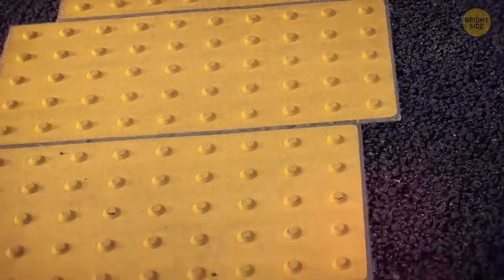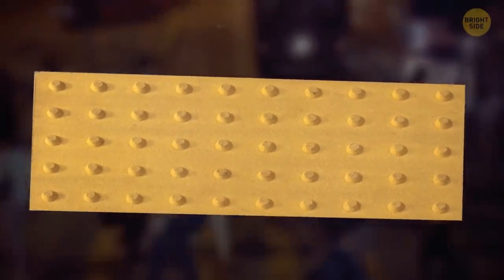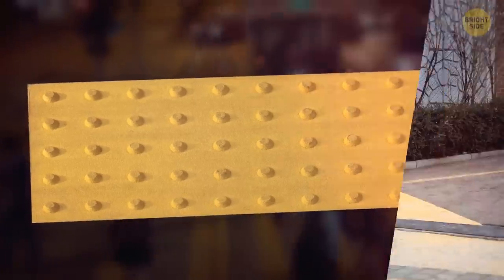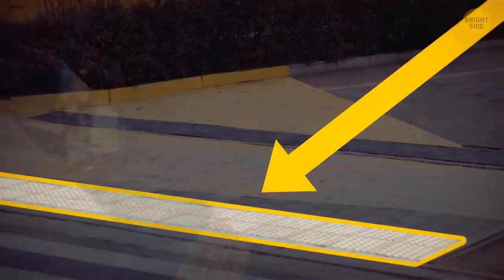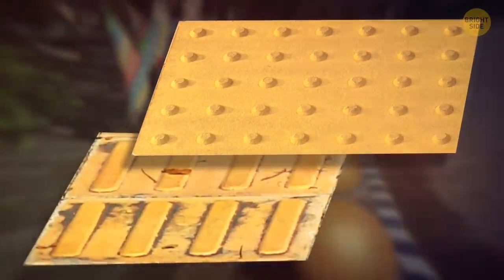Some sidewalks have little plates with bumps on them. We don't pay much attention to them, but they're very important for visually impaired people. They signal a slope that then leads to a crosswalk. Also, there are several patterns that signal different things.